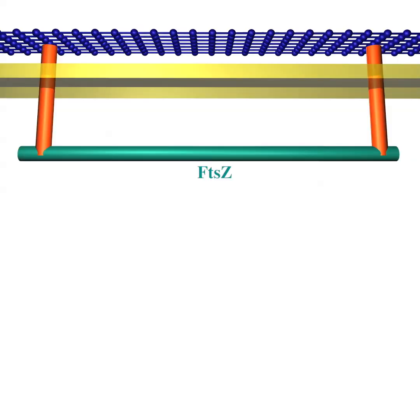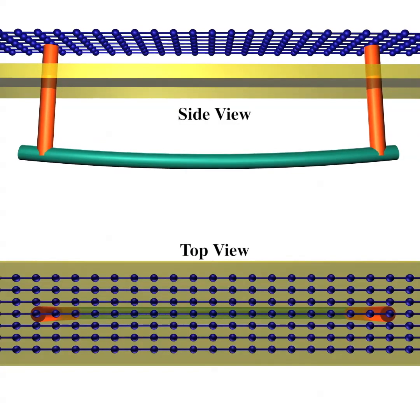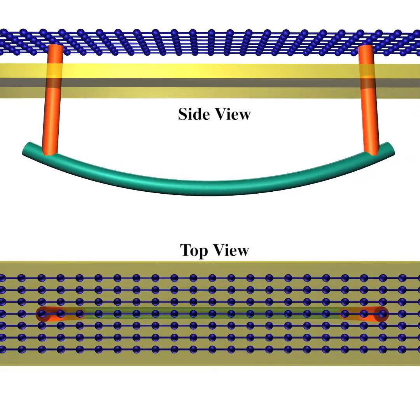We therefore explore how a single filament might create such a condition. We speculated that it can cause a local relaxation of the cell wall if the two ends of the filament are rigidly linked to the cell wall. As the filament bends, the end-to-end distance reduces, squeezing the cell wall.